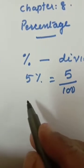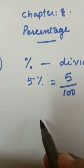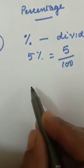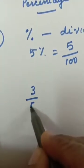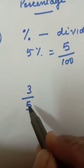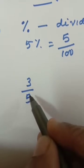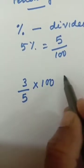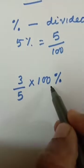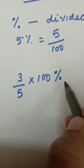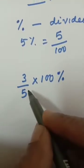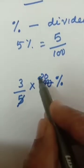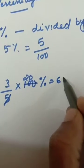Second concept: convert a number into percentage. Suppose you want to convert 3 by 5 into percentage. Then what you have to do? You have to multiply by 100 percentage — the percentage sign is compulsory. After that you cut it. Then you get 60 percentage.